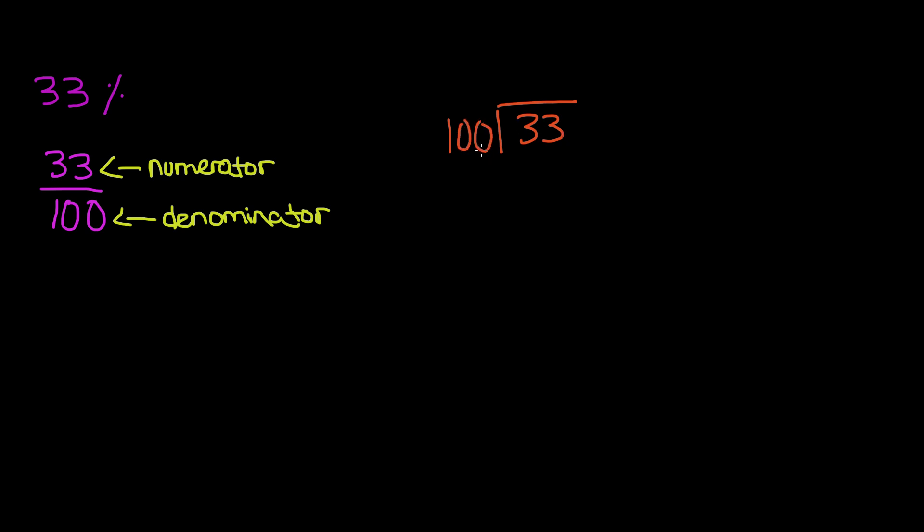We know that 33 is smaller than 100, so we're going to have to add a decimal point and add a zero. We know that 100 goes into 330 three times. We get 300. Subtract, we get 30. We need to add another zero. Now we have 100 times 3 again gives us 300. We're left with zero as our remainder. And the decimal number we get is 0.33. That means 33% is equal to 0.33. So we have our percent and we just converted it into a decimal number.